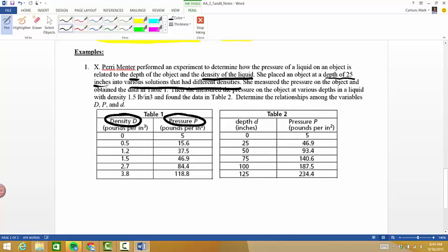So this is density related to pressure. Then she measured the pressure of an object at various depths in a liquid with a density of 1.5 pounds per cubic inch and found the data in table two. So in table two now I'm looking at depth compared to pressure. So in this one we held depth constant, and on this one over here we held density constant.